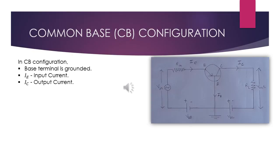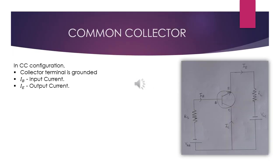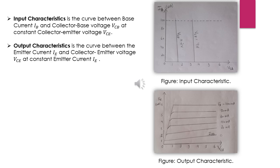In common base configuration, the base terminal is grounded; the emitter current is the input and the collector current is the output. The input signal is applied between emitter and base, and output is taken from the collector and base. The input characteristic is the curve between emitter current and base-emitter voltage at constant collector-base voltage, and the output characteristic is the curve between collector current and collector-base voltage at constant emitter current. In common collector configuration, the collector terminal is grounded; the base current is the input and the emitter current is the output. The input signal is applied between base and collector, and output is taken from the emitter-collector circuit. The input characteristic is the curve between base current and collector-base voltage at constant collector-emitter voltage.